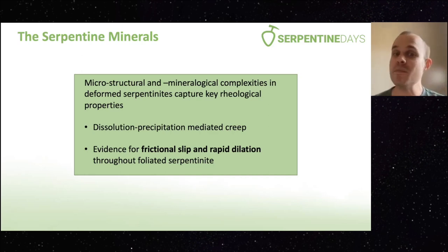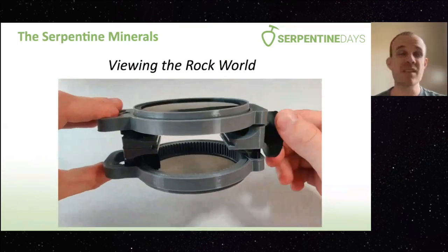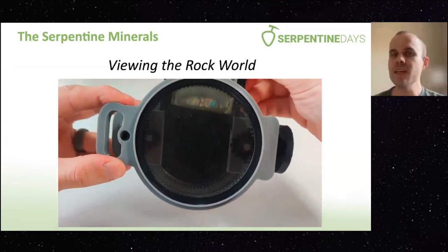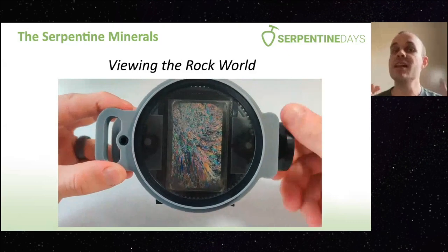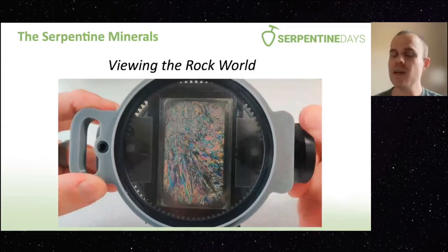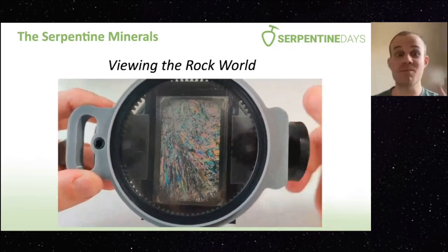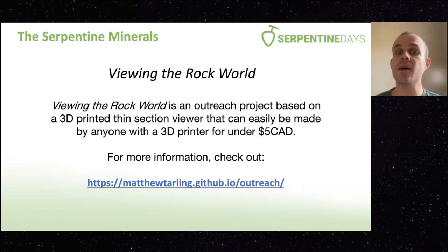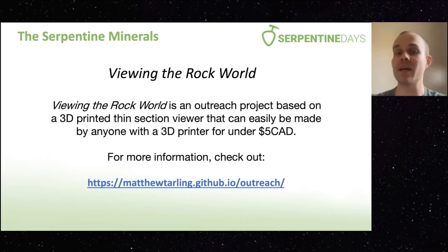That's the key message for this section. I'd like to finish with something completely unrelated: for those interested in outreach or field teaching, I've been developing a project called 'Viewing the Rock World,' which is based around a fully 3D-printable thin section viewer that allows you to view thin sections without any magnification — so they need to be coarse-grained — using a device you can make at home for under $5. If you're interested, I'm looking for people that have the ability to print it themselves. Please check out my website, also linked in the Meet the Speakers portion of the Serpentine Days.